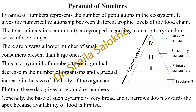The frogs and other animals are fewer in number than the insects. Therefore, there are always a larger number of small consumers present than large consumers. Thus, in the pyramid of numbers, there is a gradual decrease in the number of organisms and a gradual increase in the size of the body of the organisms. Plotting this data gives a pyramid of numbers.